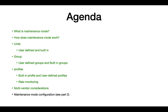We're going to look at a few things. Firstly, we'll look at a simple definition of maintenance mode and then we'll look at how maintenance mode works. We'll also look at some key terminology: units (user-defined and built-in), groups (user-defined or built-in), and profiles (built-in and user-defined). We'll look at rate monitoring and considerations for using maintenance mode in a multi-vendor environment. In the next video, I'm going to talk about maintenance mode configuration — how to actually set it up on the CLI.